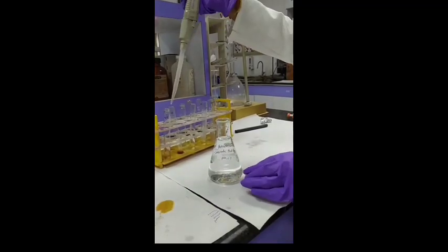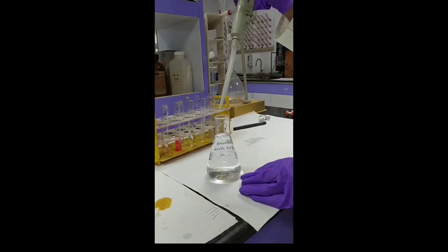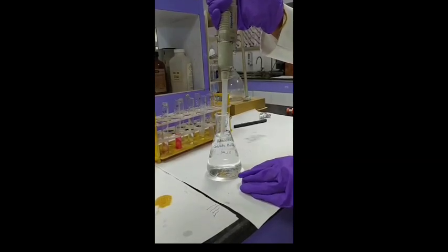Similarly, we are going to add 4 ml of potassium chloride buffer adjusted to pH 1 in another test tube of the sample and in another blank.